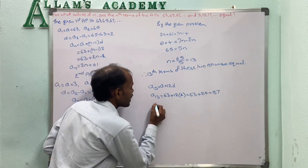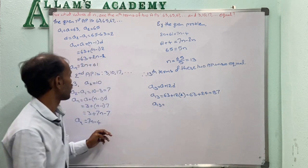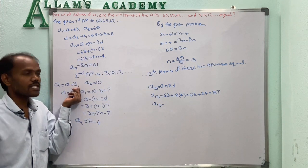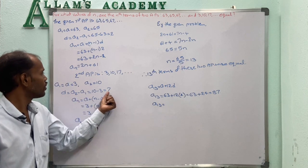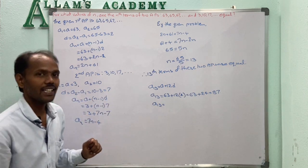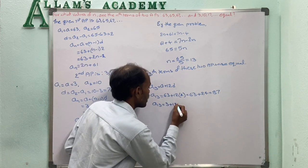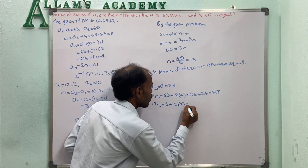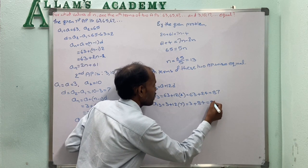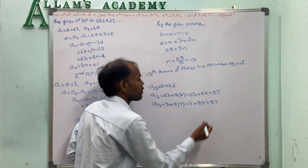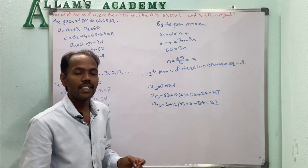For the second series, the 13th term: A = 3, D = 7, so A13 = 3 + 12 × 7 = 3 + 84 = 87. Both 13th terms are equal, confirming N equals 13.